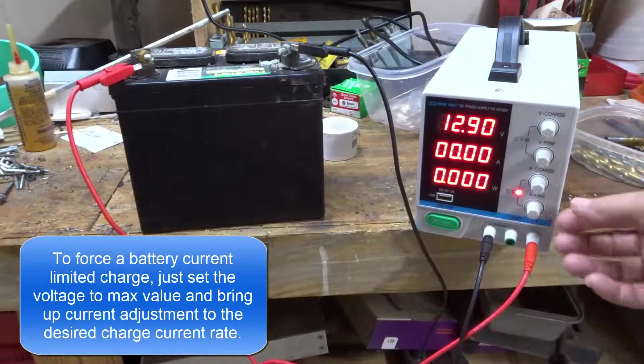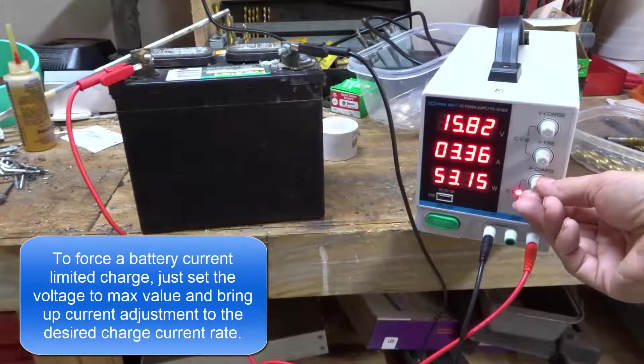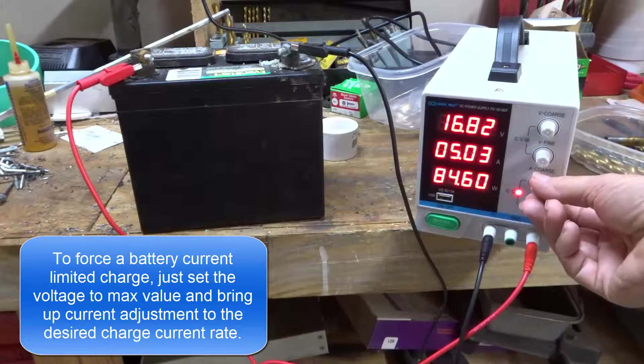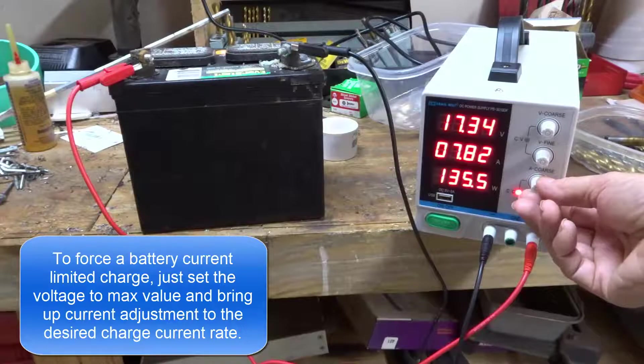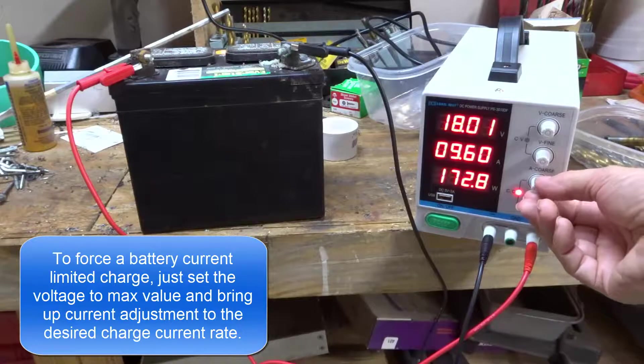Notice the battery is about 12.9 volts by itself. As I bring up the current, notice I can bring it up. I can force 6 volts, 7 amps, 9 amps, up to the limit of the charger which is 10 amps.